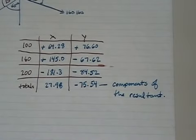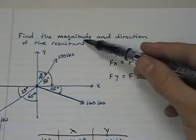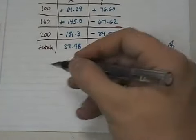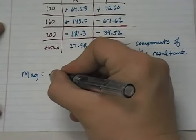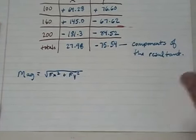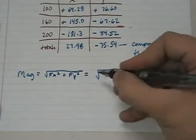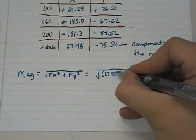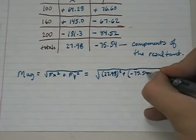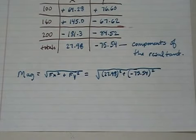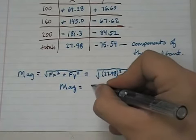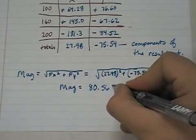Now, how do we go from the components to what we were asked for, which is the magnitude and direction? That's really simple. The magnitude of any vector is going to be the square root of the x component squared plus the y component squared. Well, in our case we know the x and y components so we plug those in. The x component will be 27.98 squared and the y component will be negative 75.54 squared. And if I square those, add them together and take the square root, I get the magnitude of this vector to be 80.56 pounds.